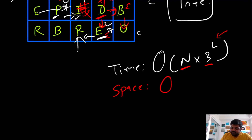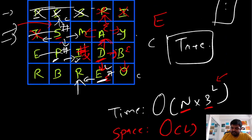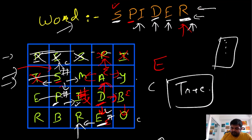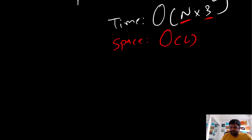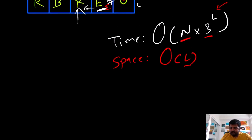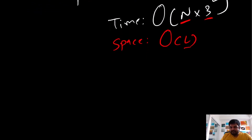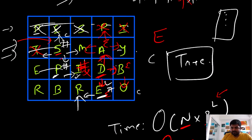For space complexity, we need stack space up to the length of the word, so it is O(L) where L is the length of the given word. This time and space complexity works perfectly fine, and I hope this solution makes sense to you. Let me quickly show you the code for this.